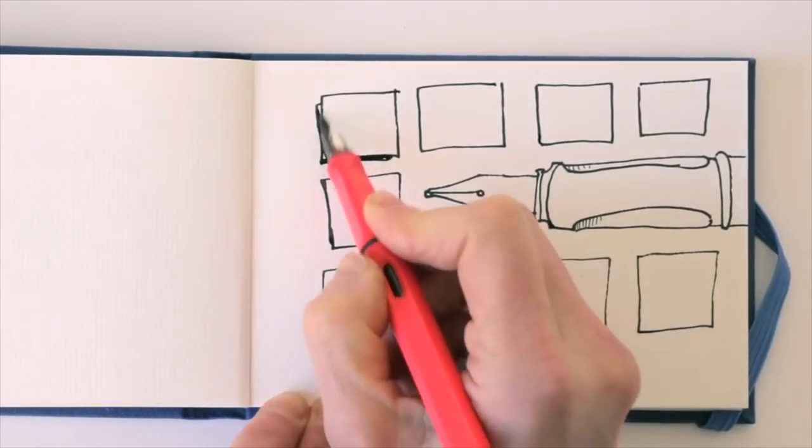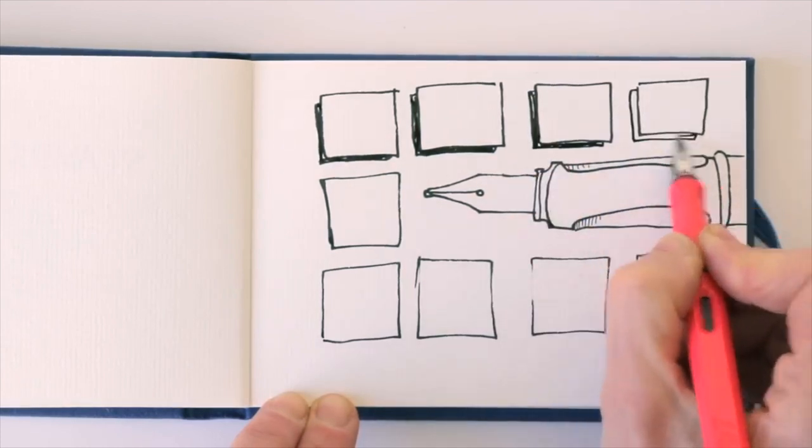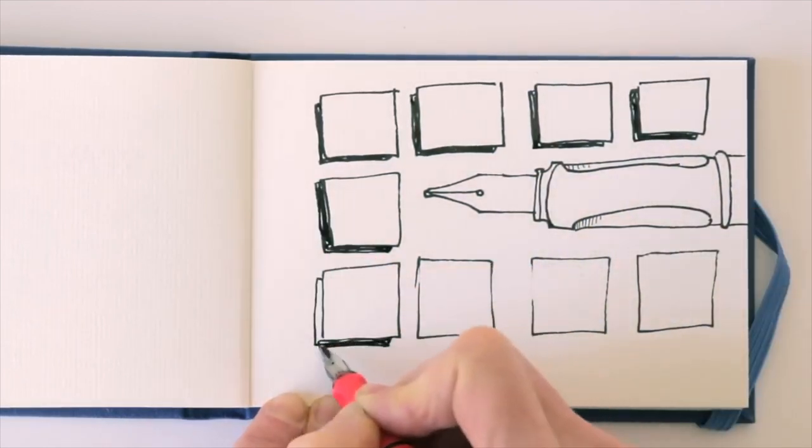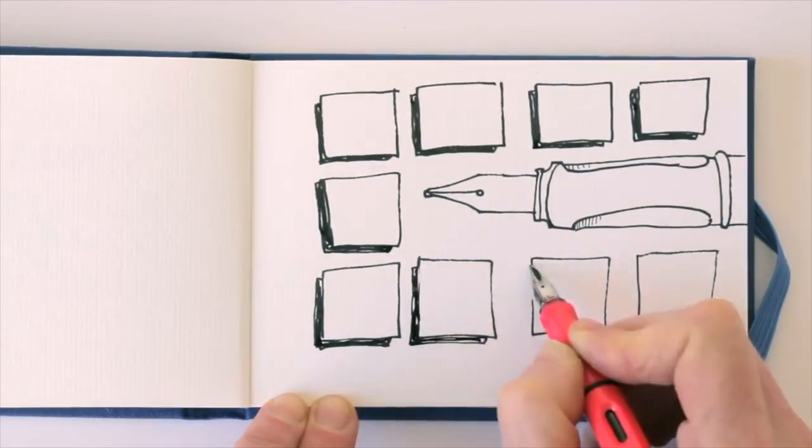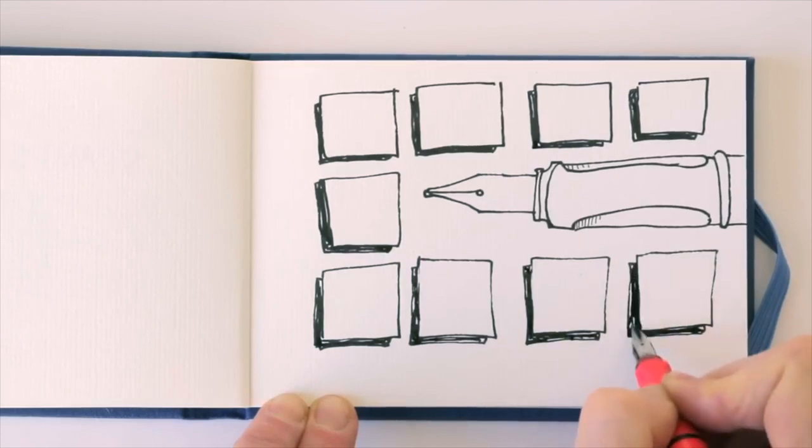Why use waterproof fountain pen ink instead of standard fountain pen ink? Well, because then you can paint with watercolor on top of your drawings. My experience with Platinum Carbon ink is that it dries pretty quickly, so the lines won't bleed when I add watercolor directly.